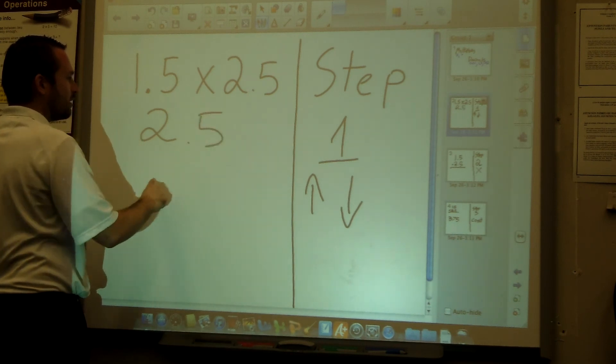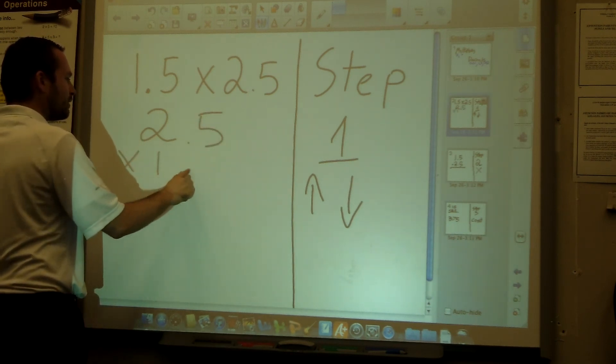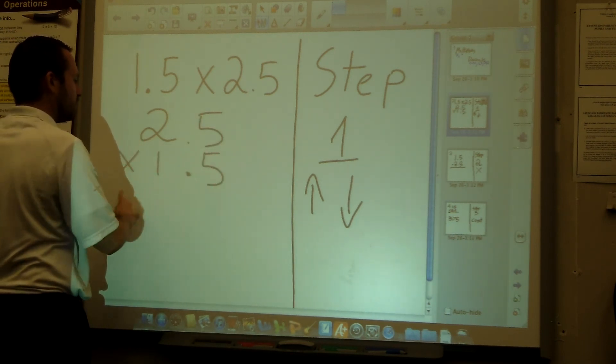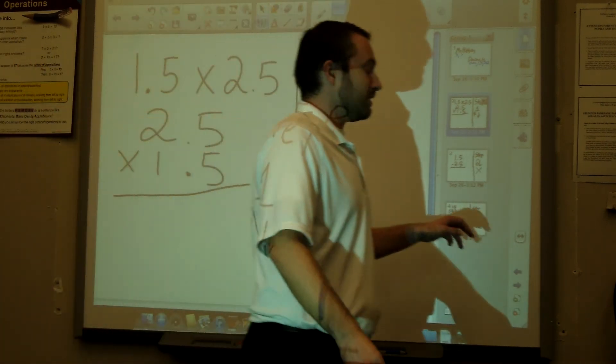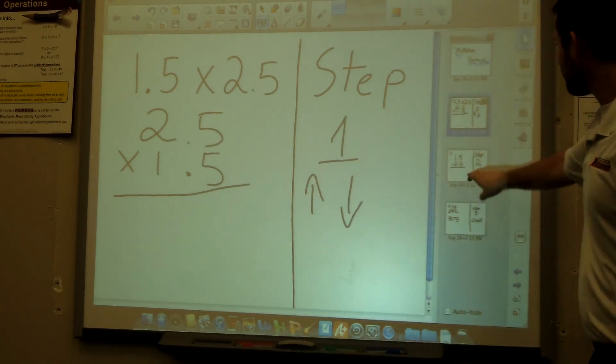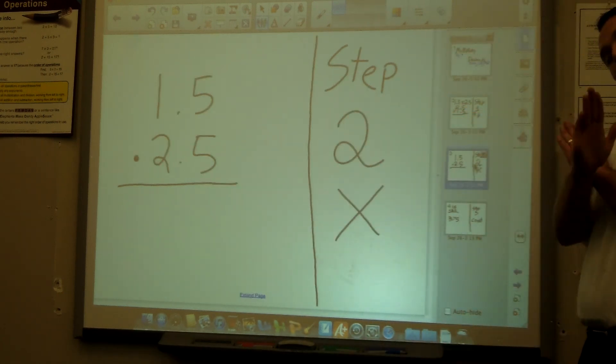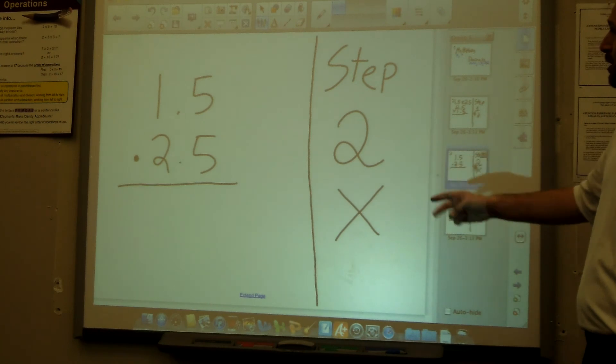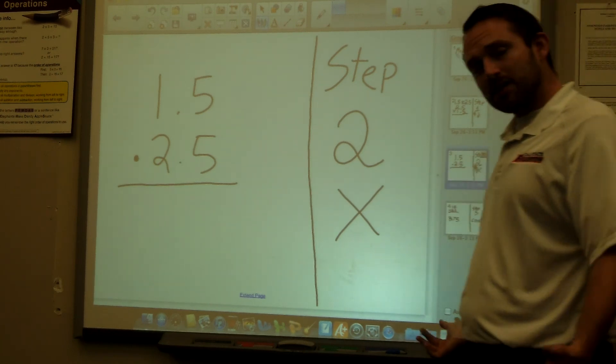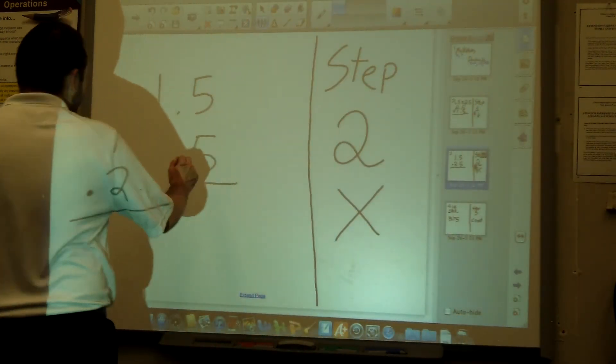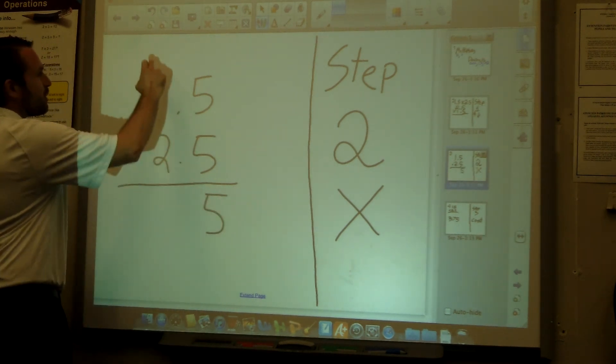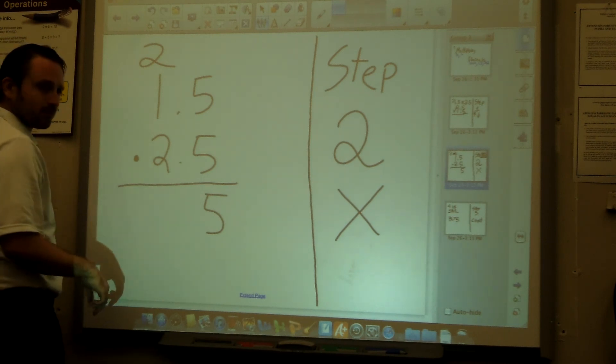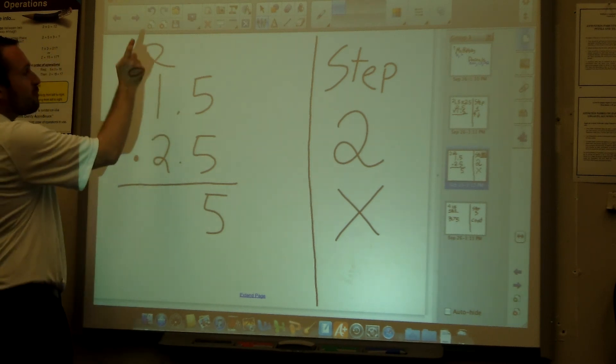Let's go on to step 2: multiply. So let's just multiply. 5 times 5 is going to be 25. 5 times 1 is going to be 5, but you add that 2, you get a 75.